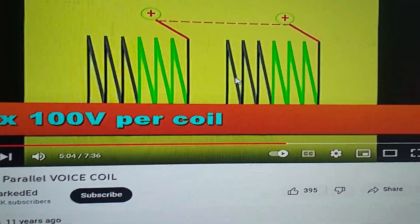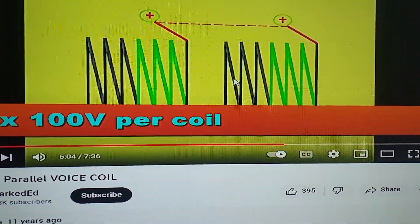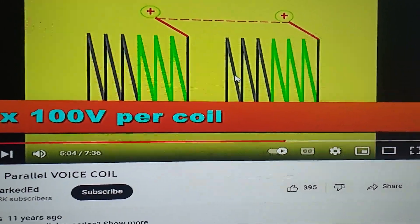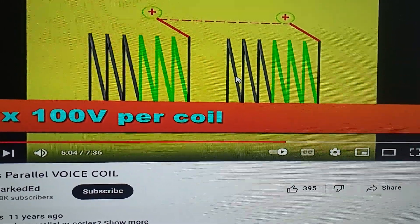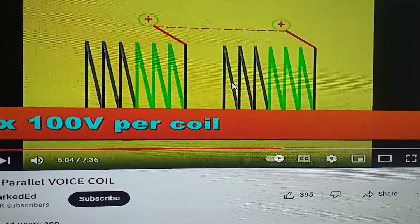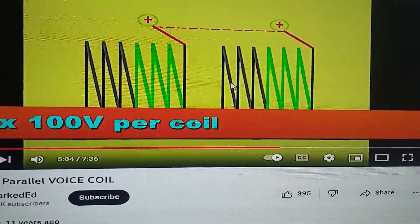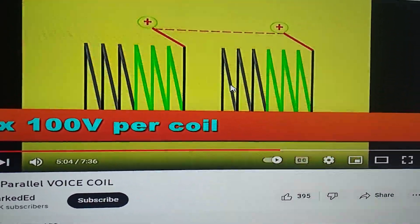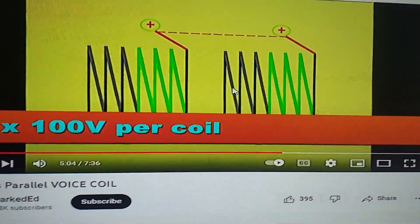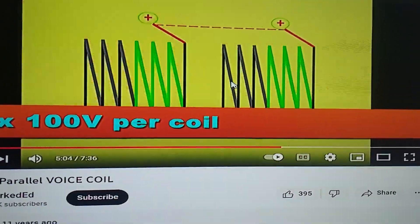He's not accounting for BL. BL is the flux, the magnetic force, plus L - L is the length of wire. They just call it L as in length of wire, but you don't calculate it in length, you calculate it in number of turns.